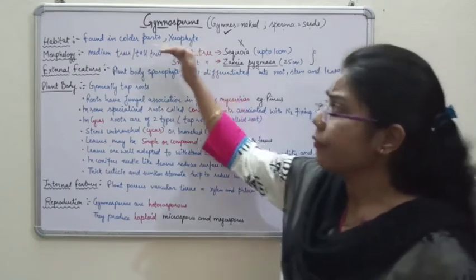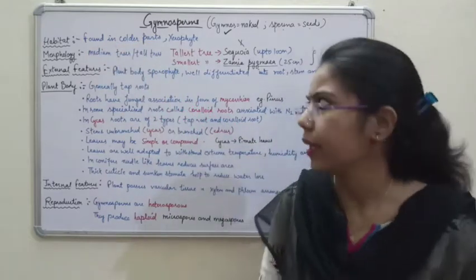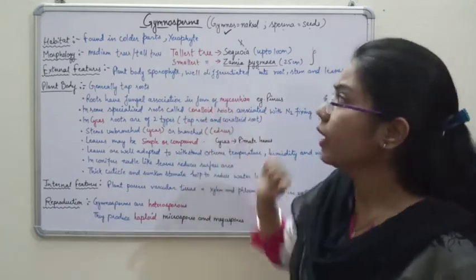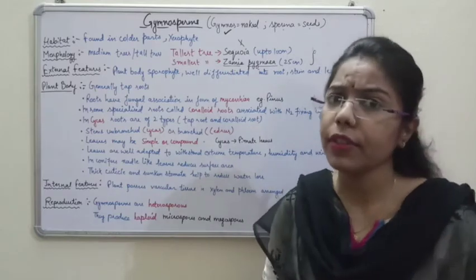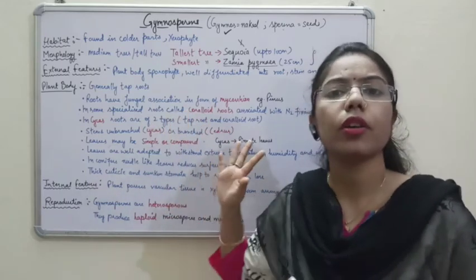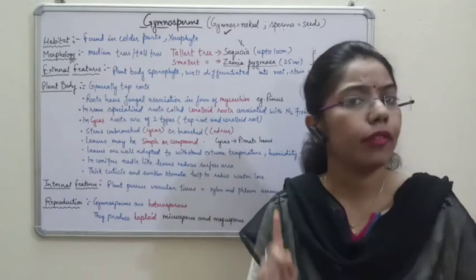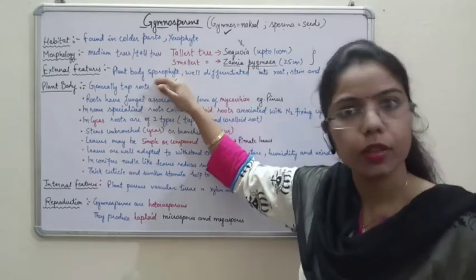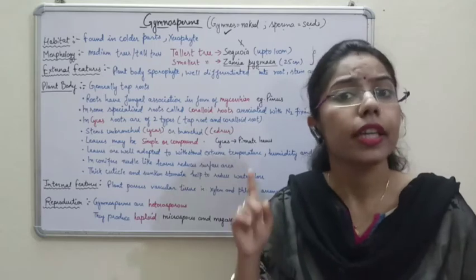Now whenever we talk about morphology, we are talking about the external structure of the plant — the height and length. As we have done in case of thallophyta, bryophyta, and pteridophyta — in pteridophyta the main plant body is sporophyte. But in case of bryophyte, the main plant body was gametophyte.